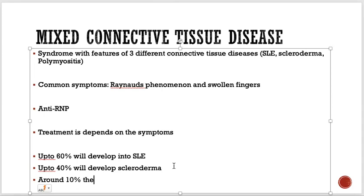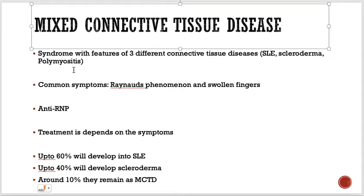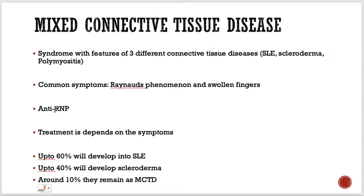Mixed connective tissue disease, being a collection of different diseases, has symptoms of different conditions. These patients also have more common cardiac, adrenal, and lung involvement. Most importantly, most patients with MCTD have anti-RNP antibodies positive — this is the key point to remember.